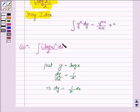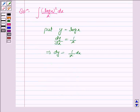Now 1 upon x into dx is equal to dy. And log x is y. So the integral becomes y square dy.